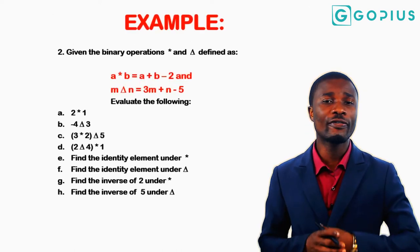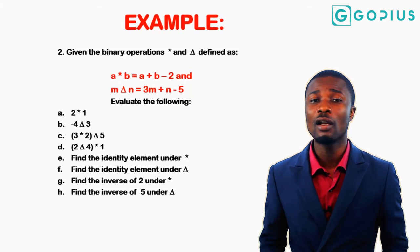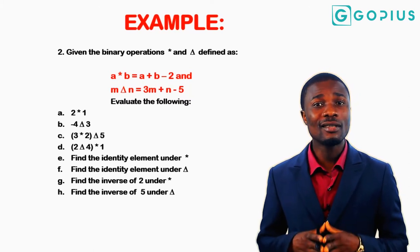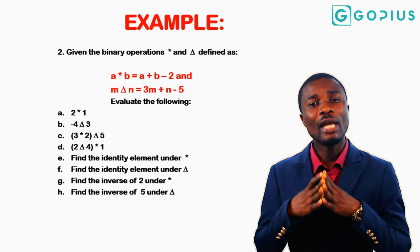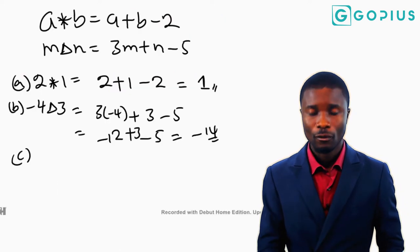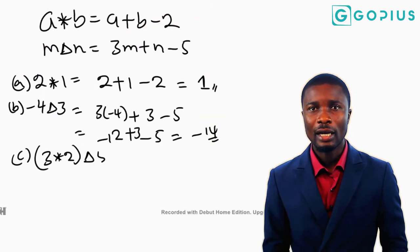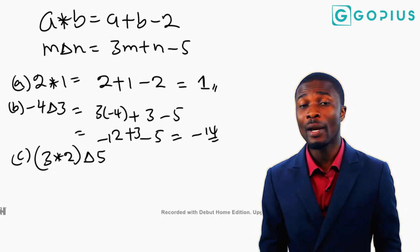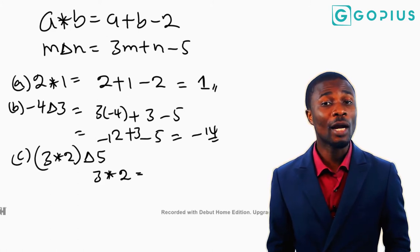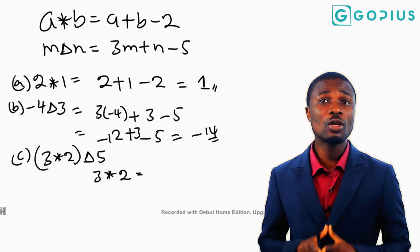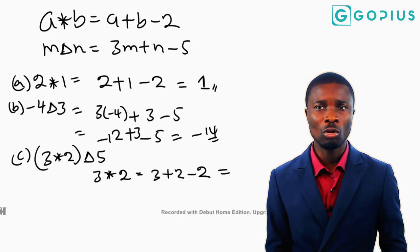The next question is: find (3 star 2) delta 5. Here the two binary operations are joined together. We take care of the bracket first, which is 3 star 2, then use that answer to evaluate delta 5. Using a star b equals a plus b minus 2, we get 3 star 2 equals 3 plus 2 minus 2.